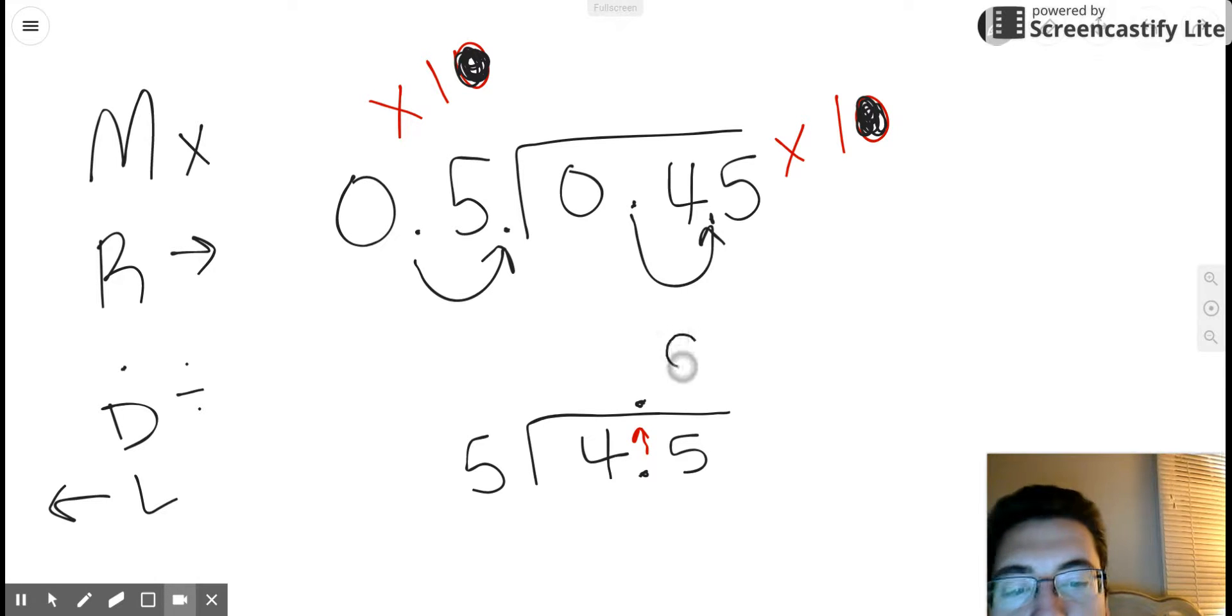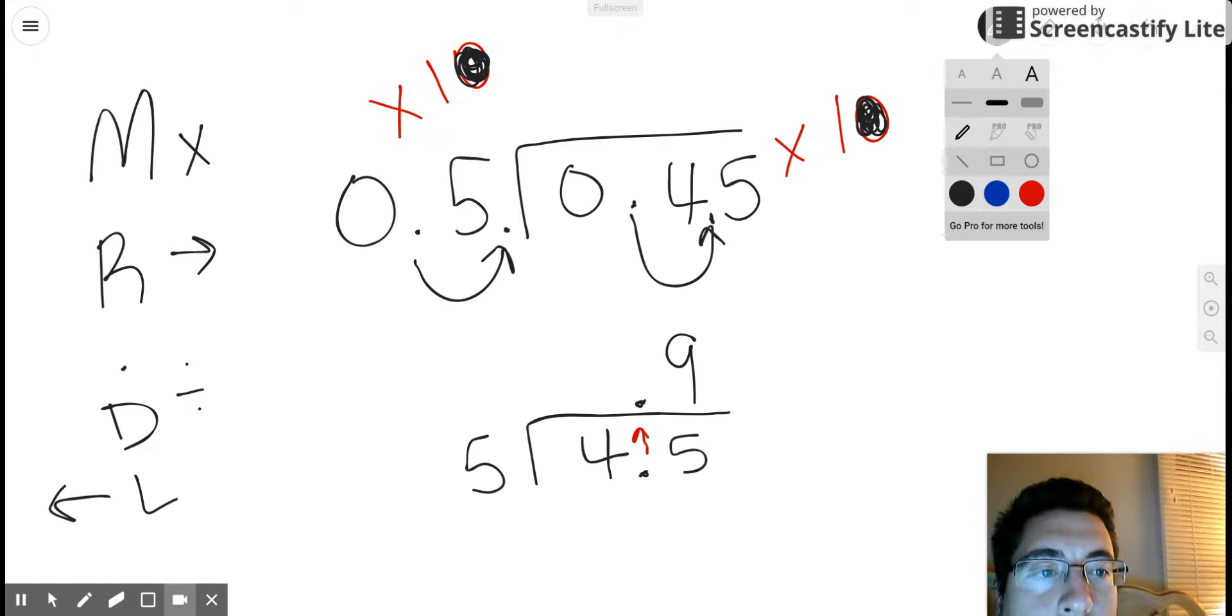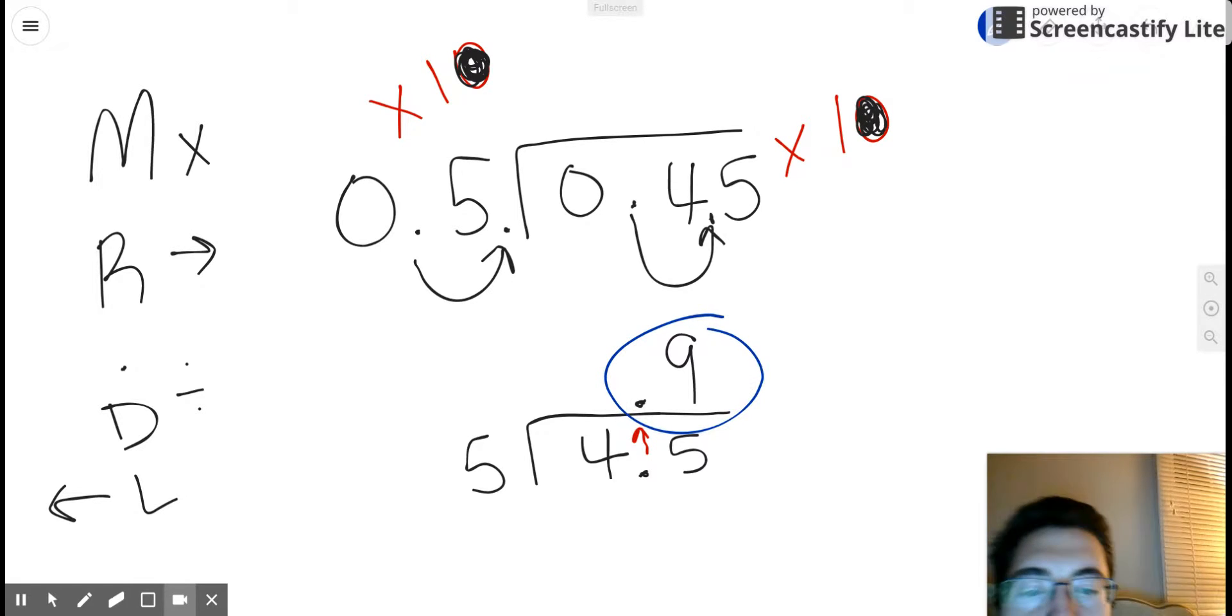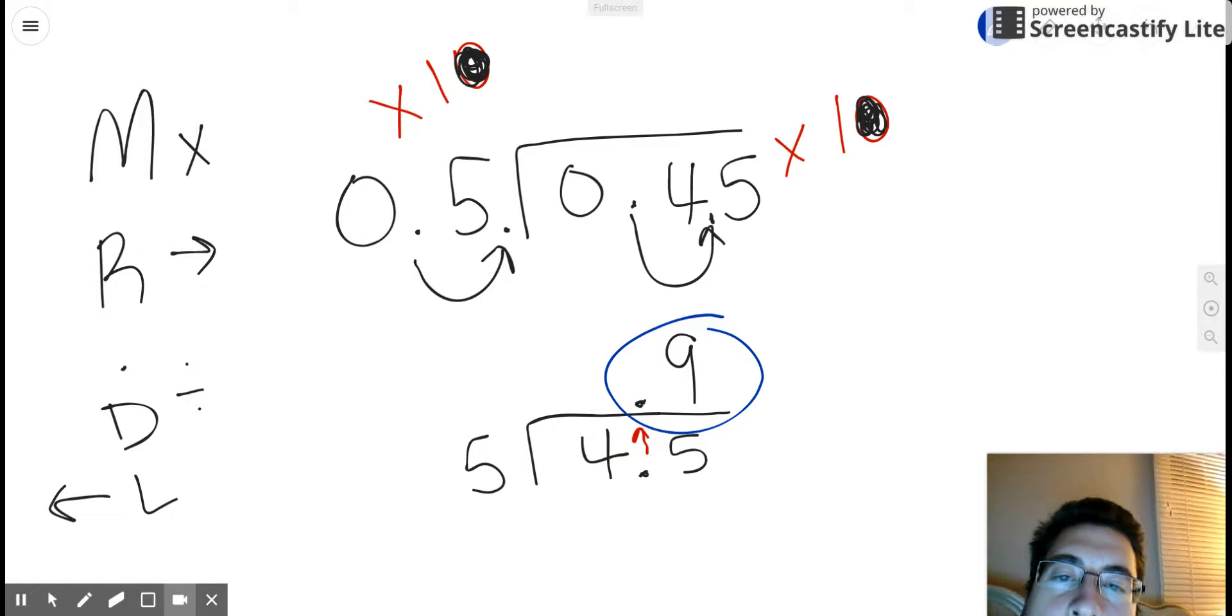We know 5 goes into 45 nine times. And so the quotient, or the answer to 0.45 divided by 0.5, is 0.9.